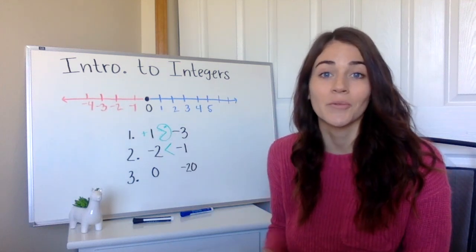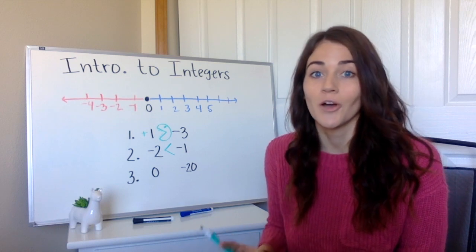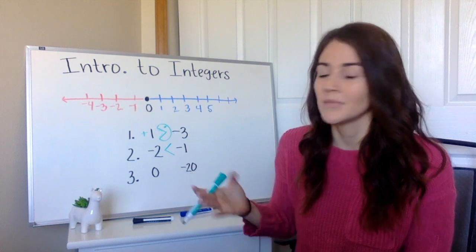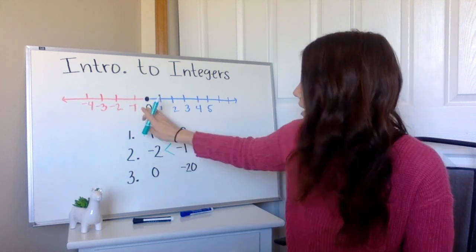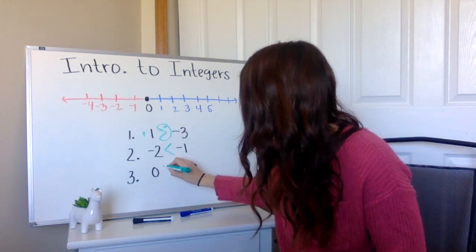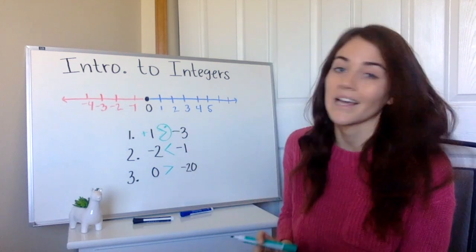And then last one here is comparing with zero. So we should know if we have a positive number, that's going to be greater than zero. If we have a negative number right over here to the left of zero, that's going to be smaller than zero, less than zero.